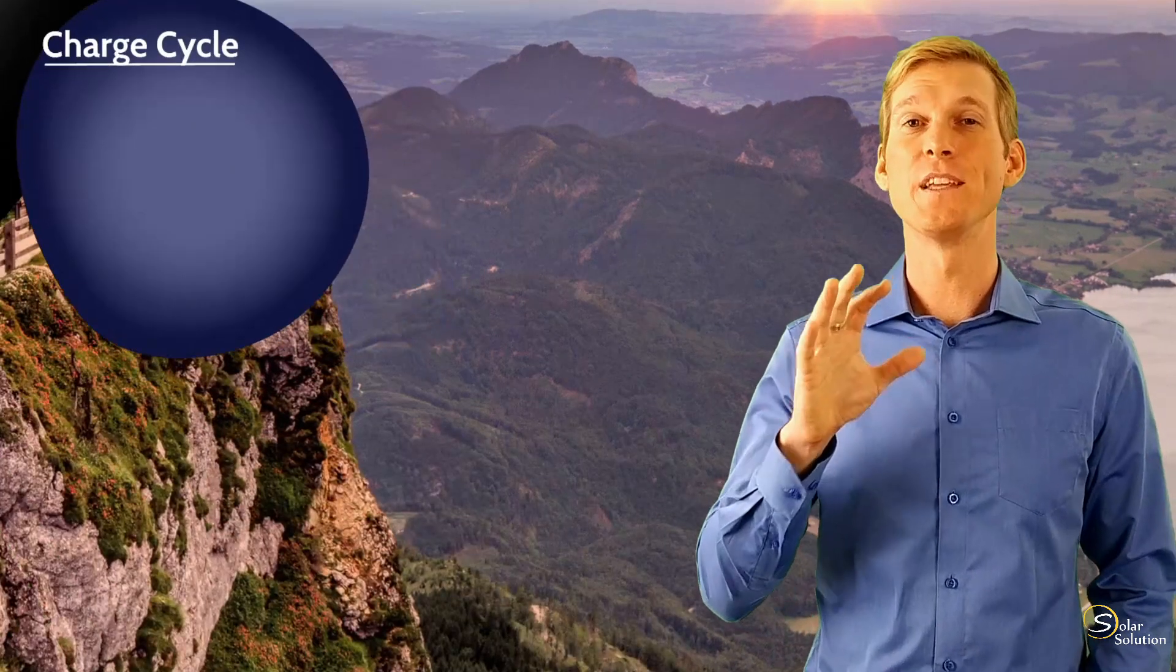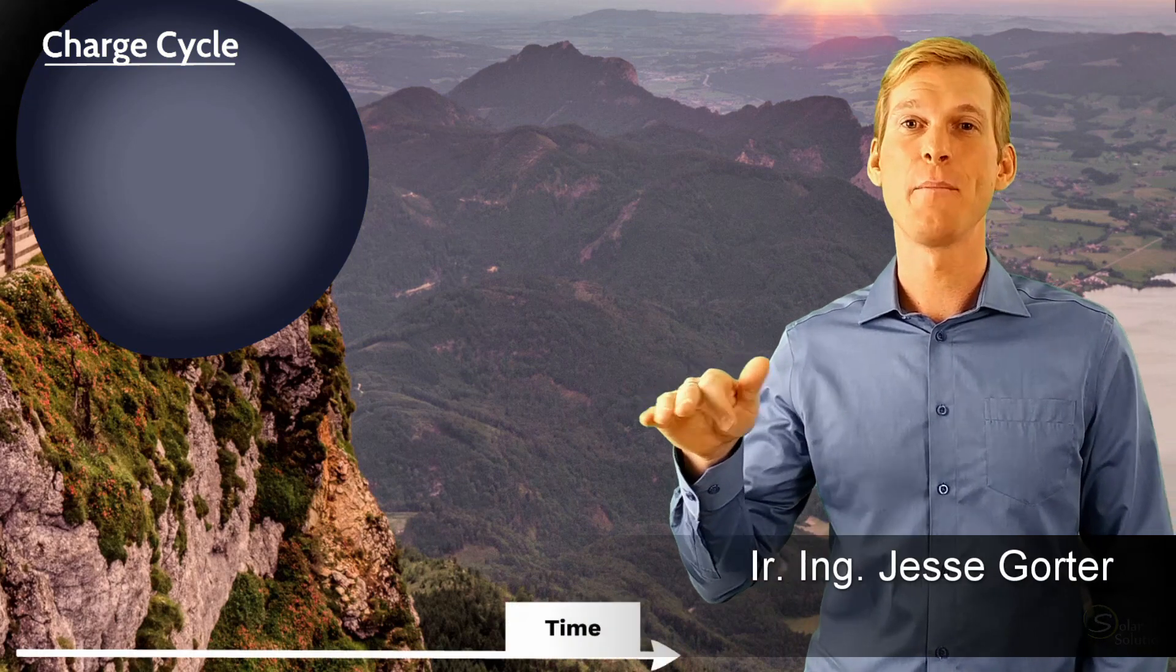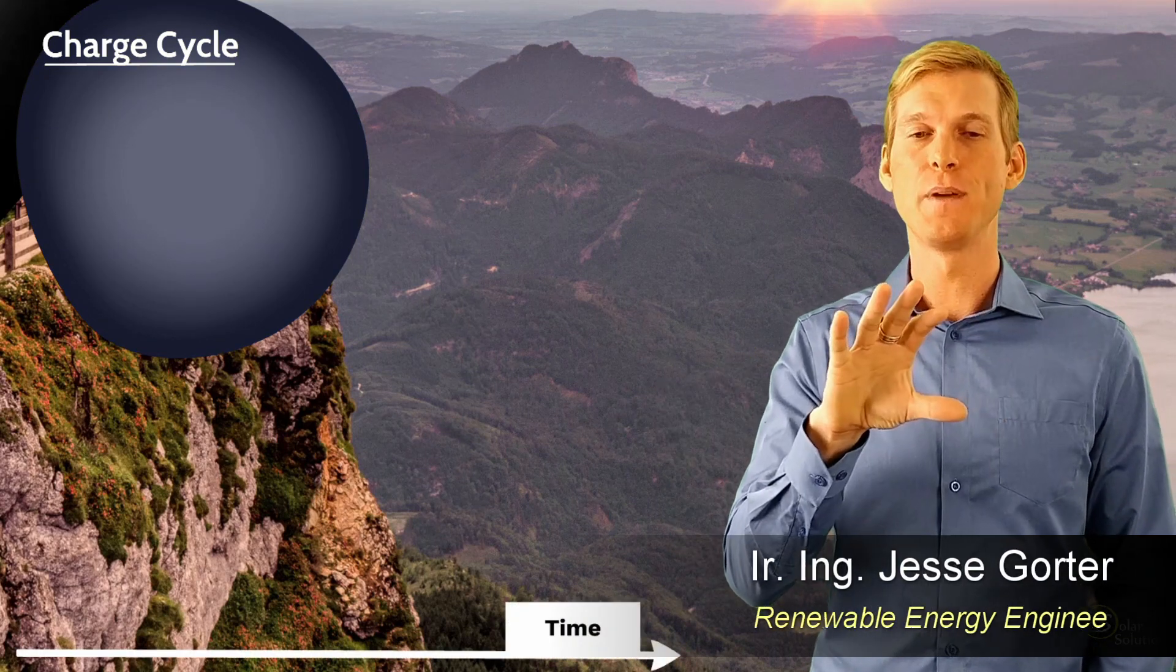So I would like to explain this topic with a simple graph again, whereby on the horizontal axis we have the time and on the vertical axis we have the voltage over the battery.